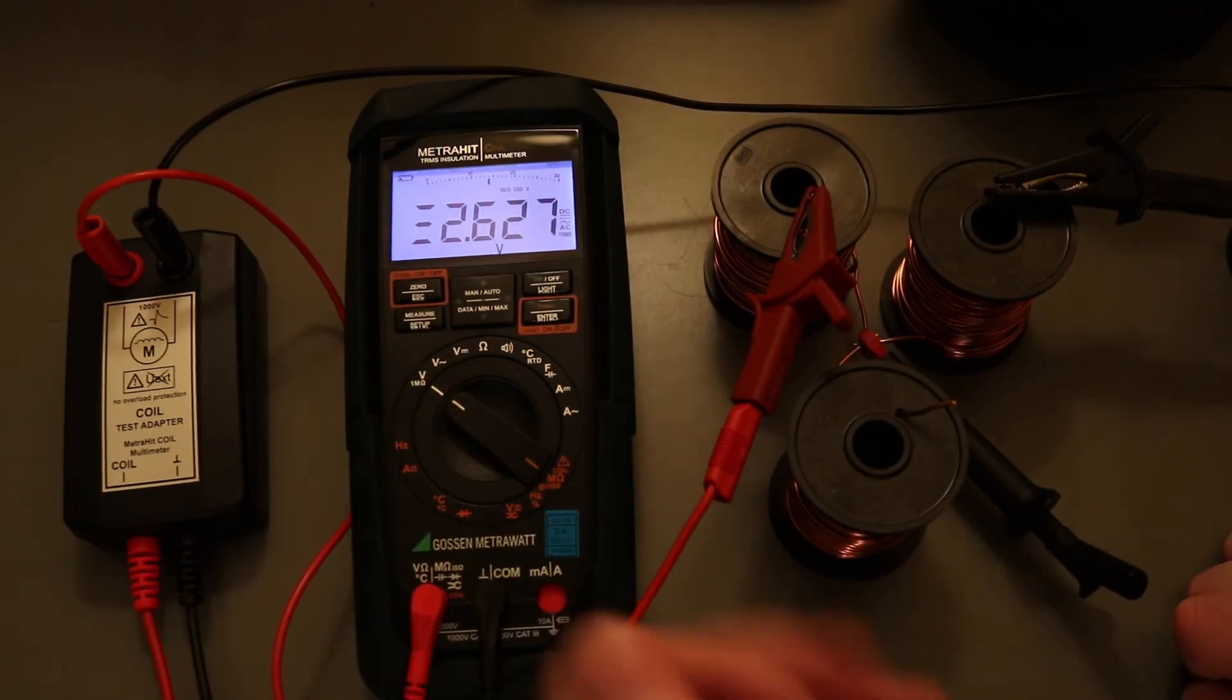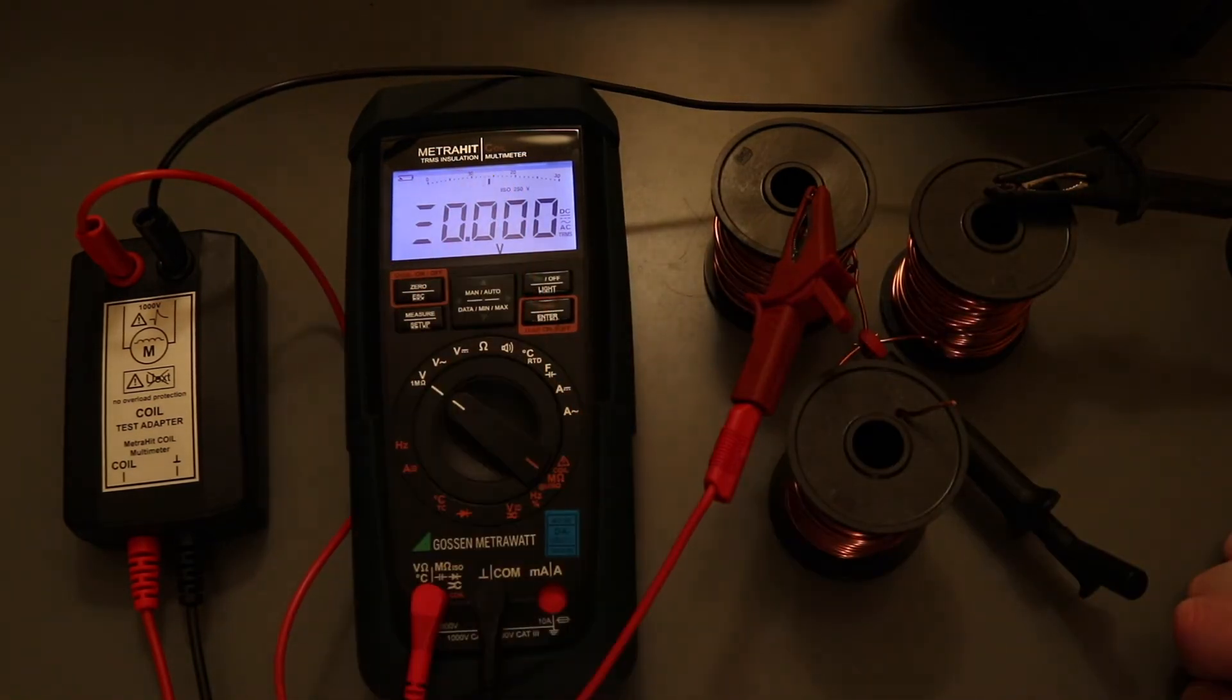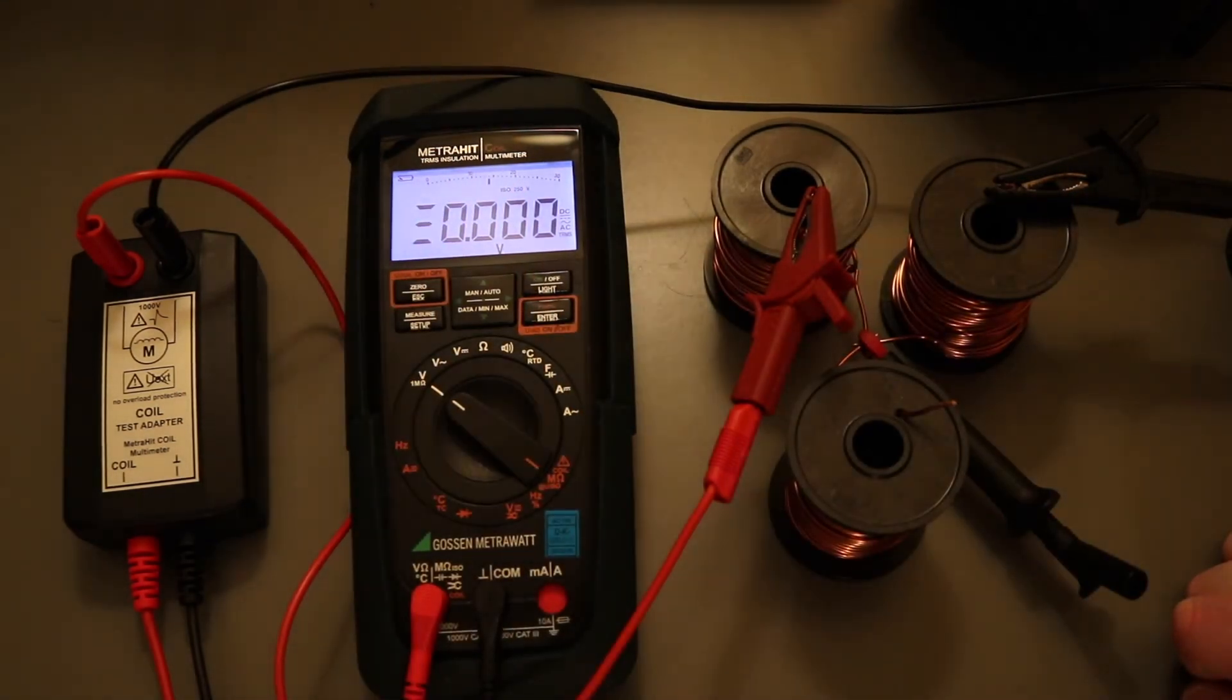So again, it's lost all those actual values, but it retains the differential. About 15% there. And that's the coil test completed. Quite quick and easy to do.